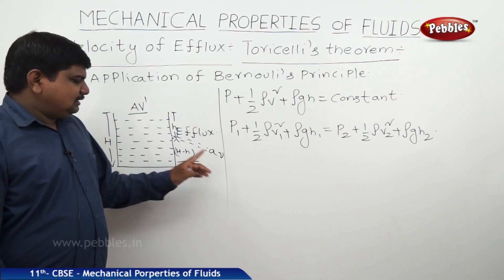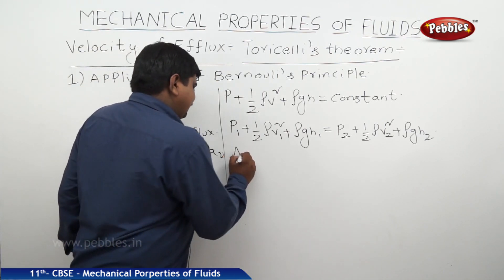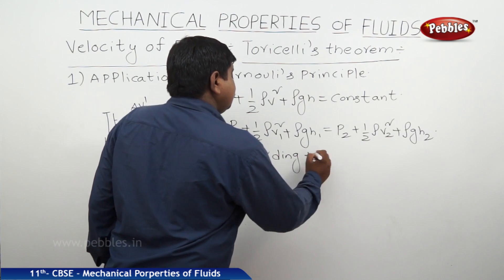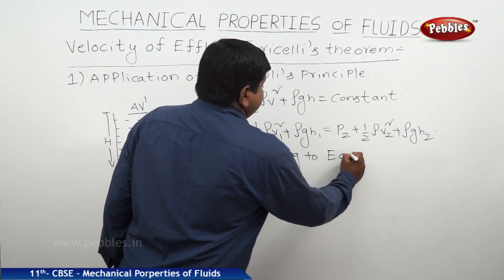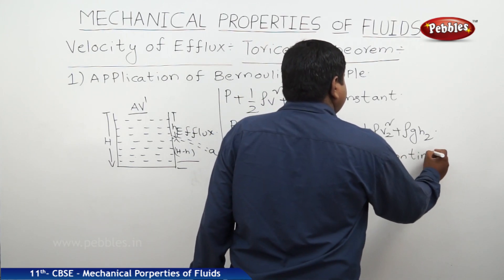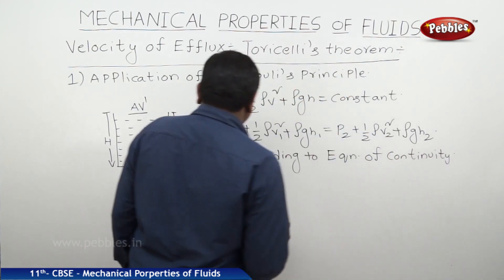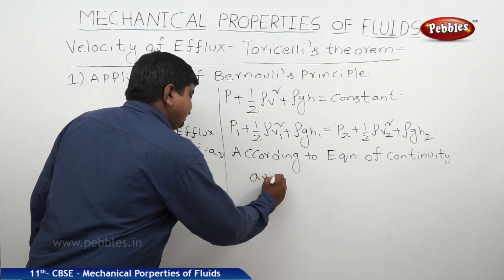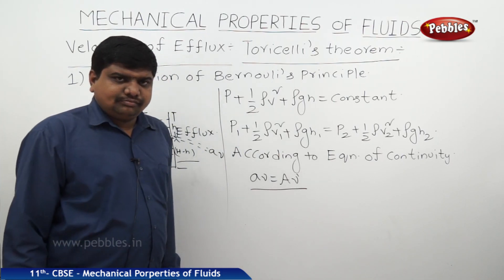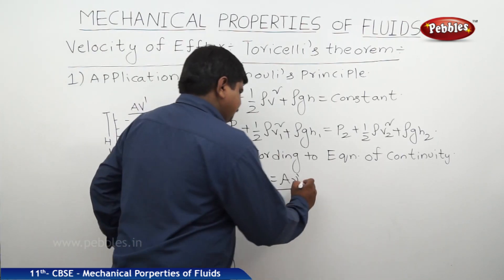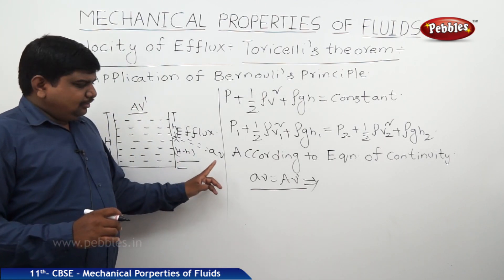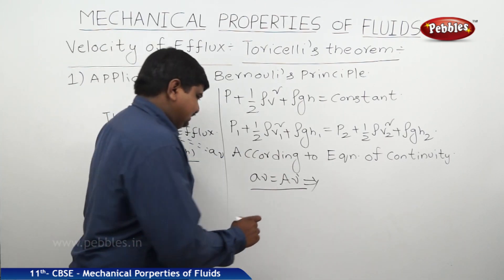From the equation of continuity, we can write: small a times v is equal to capital A times V-dash. From this, v is equal to (A divided by a) times V-dash, or equivalently V-dash equals (a/A) times v.